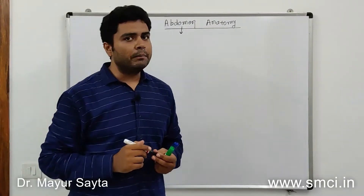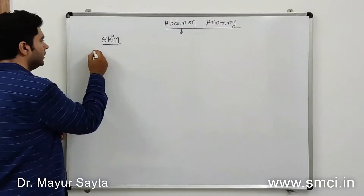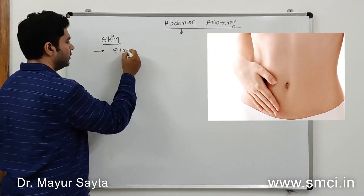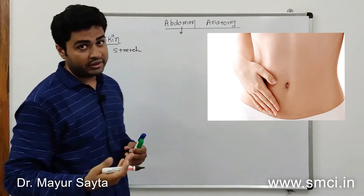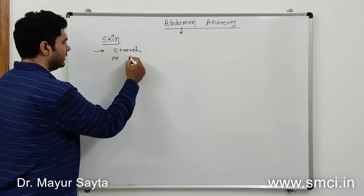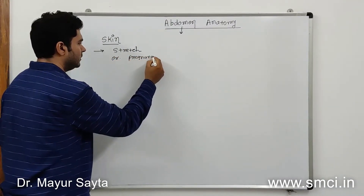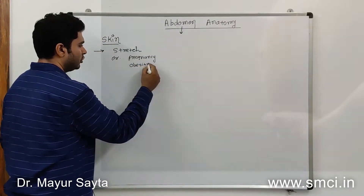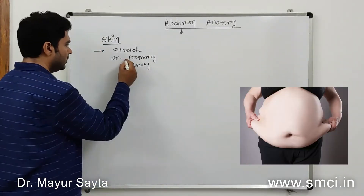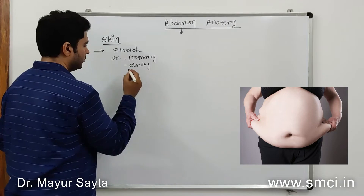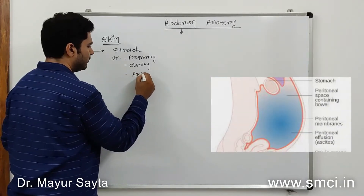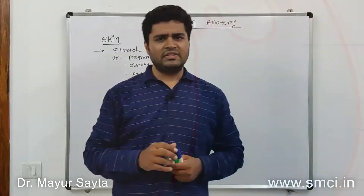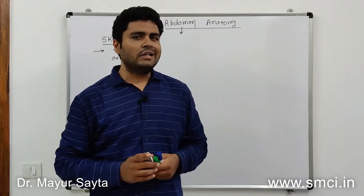The skin of the abdomen can tolerate an enormous amount of stretch — it has the highest capacity for tolerating stretch. For example, in pregnancy the fetus can grow inside the uterus to any extent. In obesity, fat accumulates greatly. And in ascites, fluid accumulation puts the abdominal skin under stretch.